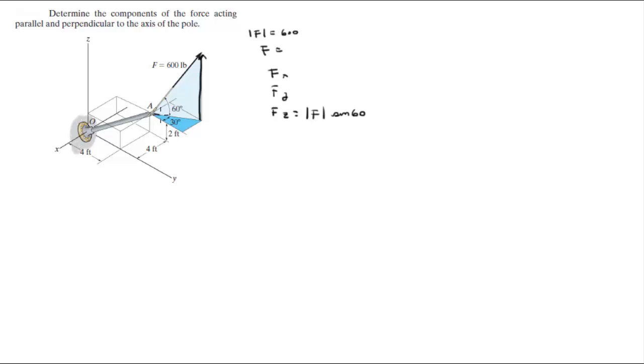Now we're going to find this component, the projection of F along the x and y plane. It's found by doing the magnitude F times the cosine of 60. So let's find these two forces on the calculator. This one comes out to be 520, and this one comes out to be 300.